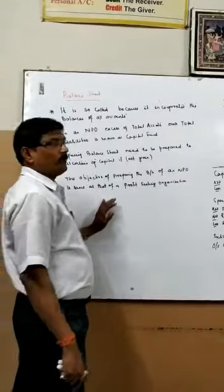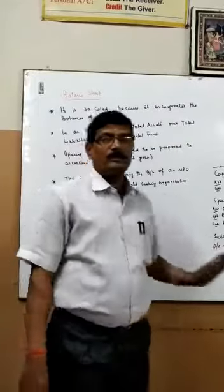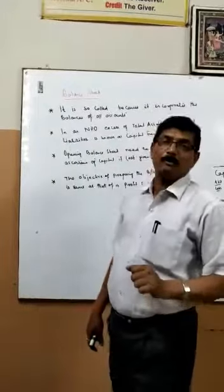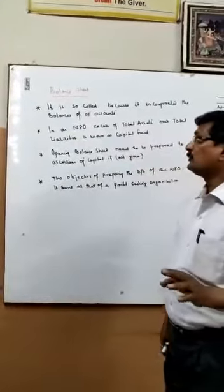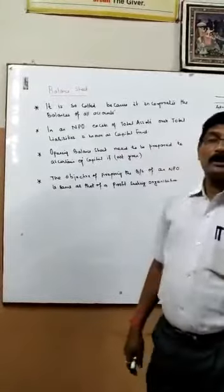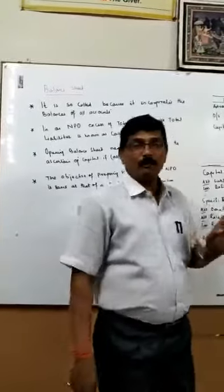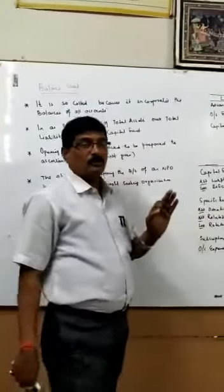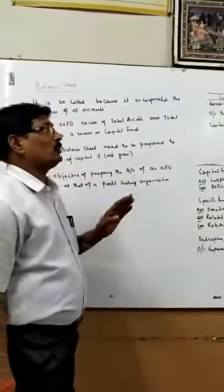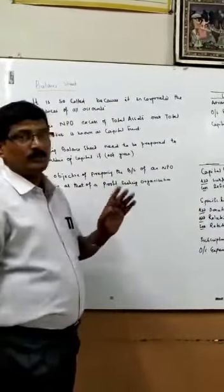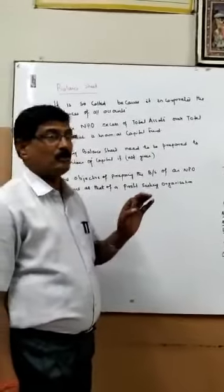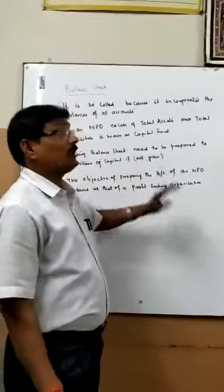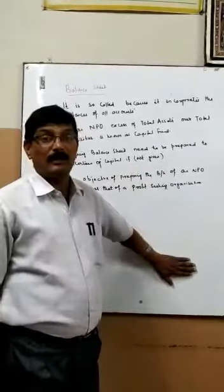At the very beginning, we discussed that an NPO has to maintain three accounts. They are the receipts and payments account, which is just like a cash flow statement; the income and expenditure account, just like a profit and loss account; and the third one is a balance sheet.